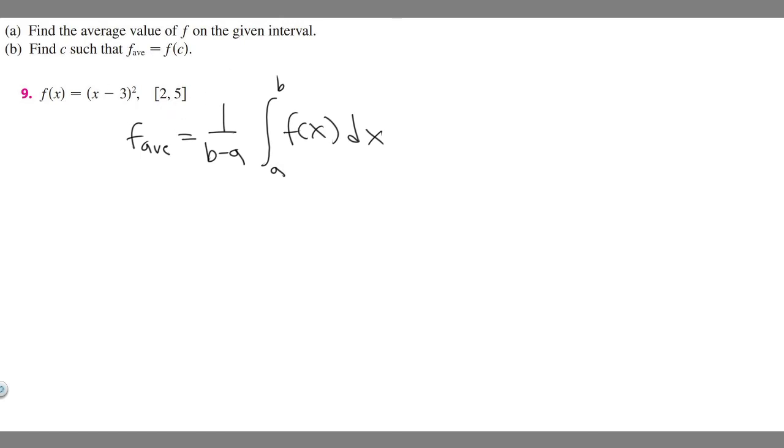So f of x is just our function, and then b and a are just going to be these two numbers. So our lower bound is a, upper bound is b. So lower bound is 2, upper bound is 5.